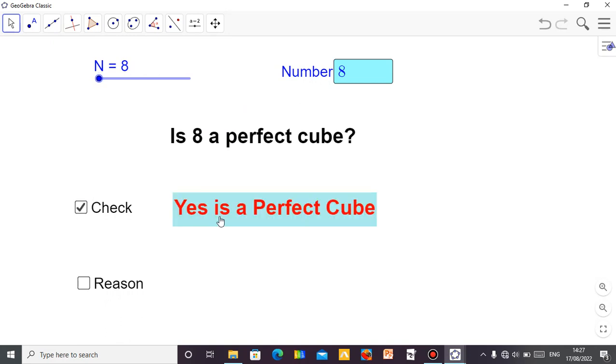So if you click on check, it will say yes, 8 is a perfect cube. That means 8 is a perfect cube because 2 times 2 times 2 equals 8.